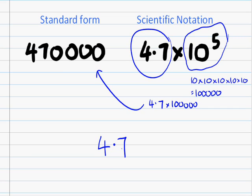You'll probably realise this. An example: if you have 9 and you times it by 100, the decimal place is there, and you move it 2 times — 1, 2 — so the answer is 900. It's just a matter of moving a decimal place.